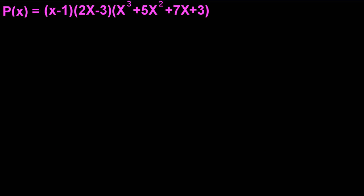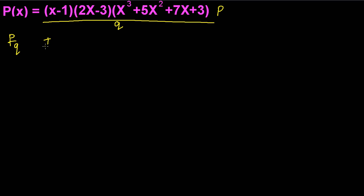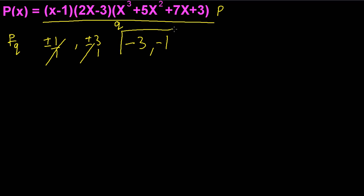For the next cubic x³ + 5x² + 7x + 3, we list P over Q combinations. P is from the factors of 3: ±1 and ±3; Q is from 1. Since we know there are no more positive roots, we only need to check negative values: −1 and −3.